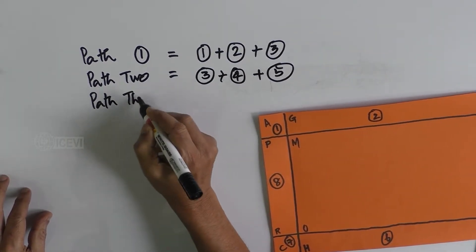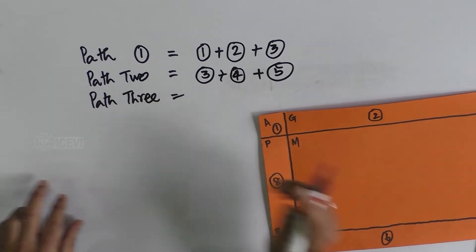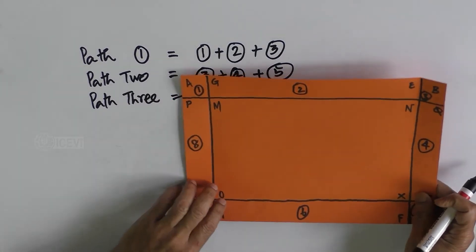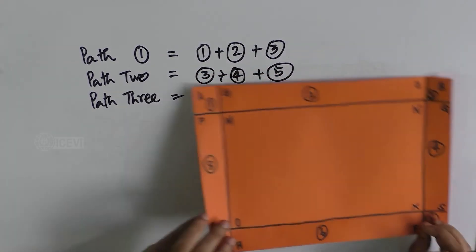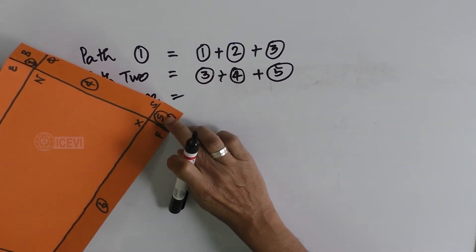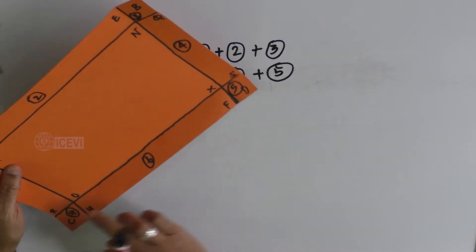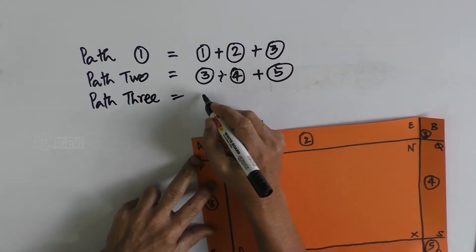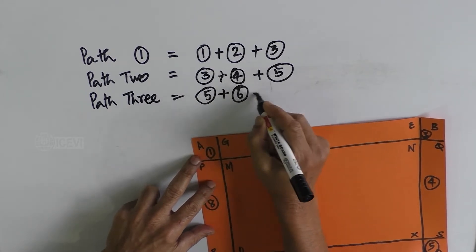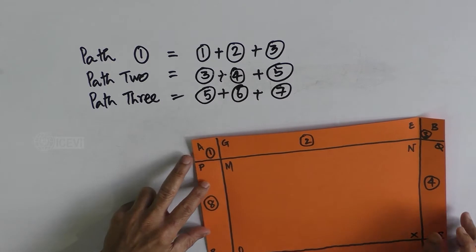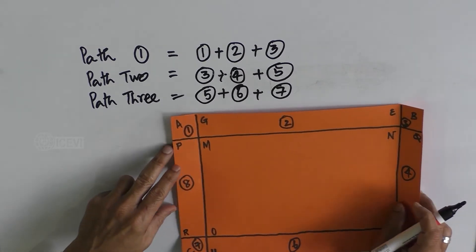Path three, when you take it independently, is nothing but the areas of box five, box six, and box seven. That means five plus six plus seven.